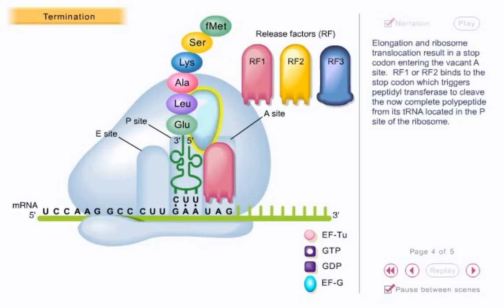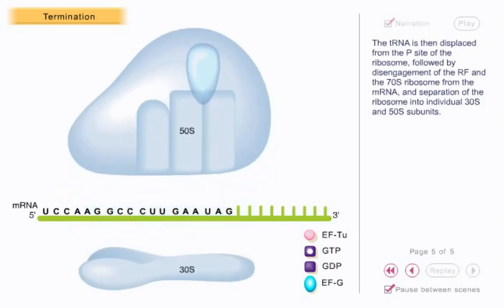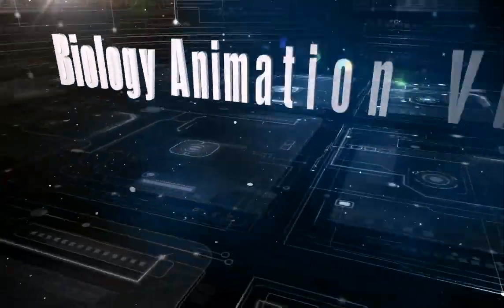which triggers peptidyl transferase to cleave the now complete polypeptide from its tRNA located in the P site of the ribosome. The tRNA is then displaced from the P site of the ribosome, followed by disengagement of the RF and the 70S ribosome from the mRNA, and separation of the ribosome into individual 30S and 50S subunits.